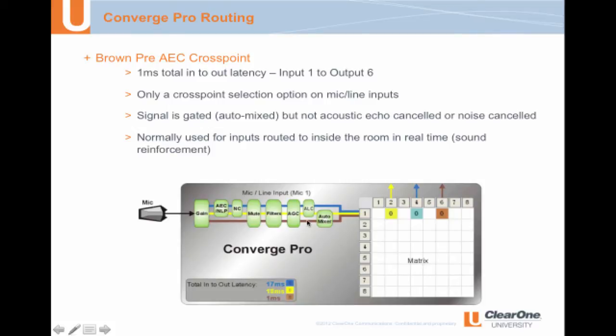The brown cross point does not go through the echo canceler or noise canceler. It also does not go through the automatic level control. Those three things being removed from the signal path make it ideal when routing audio inside the room in real time for sound reinforcement. It has the lowest latency. We don't need echo cancelers for mics being routed back into the local room — that's sound reinforcement. The noise canceler has no benefit because we can hear the noise in the room acoustically; canceling it through the mic circuit would not help.